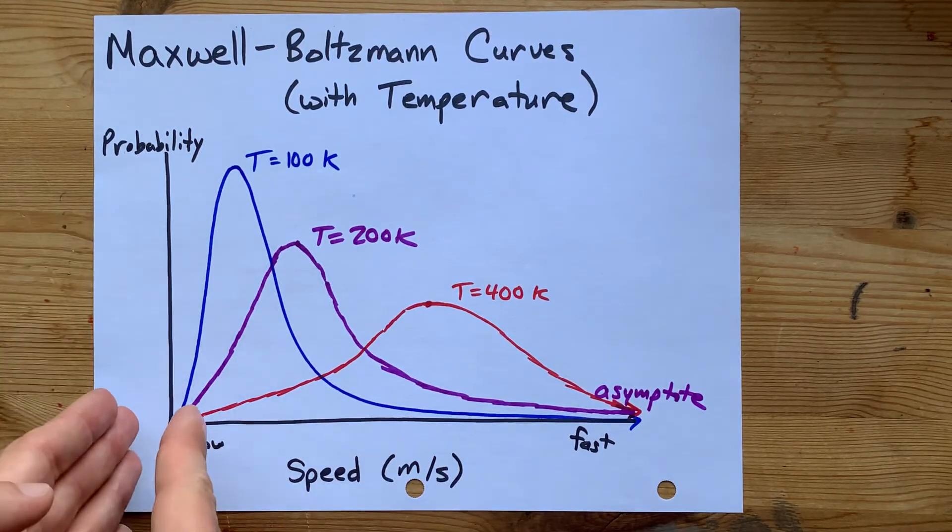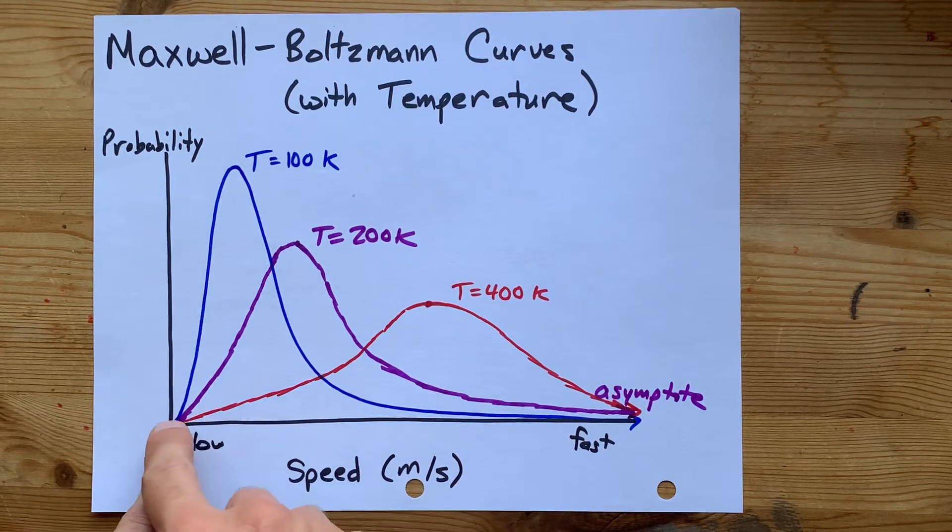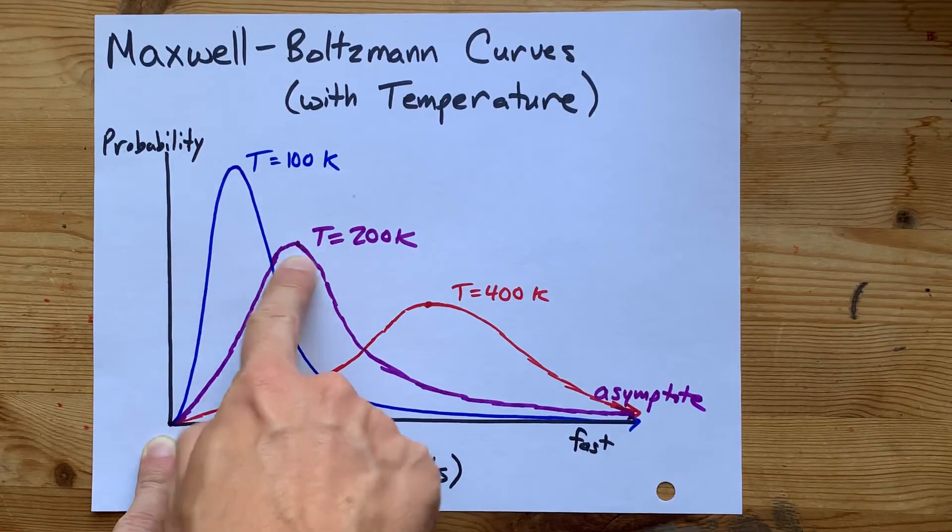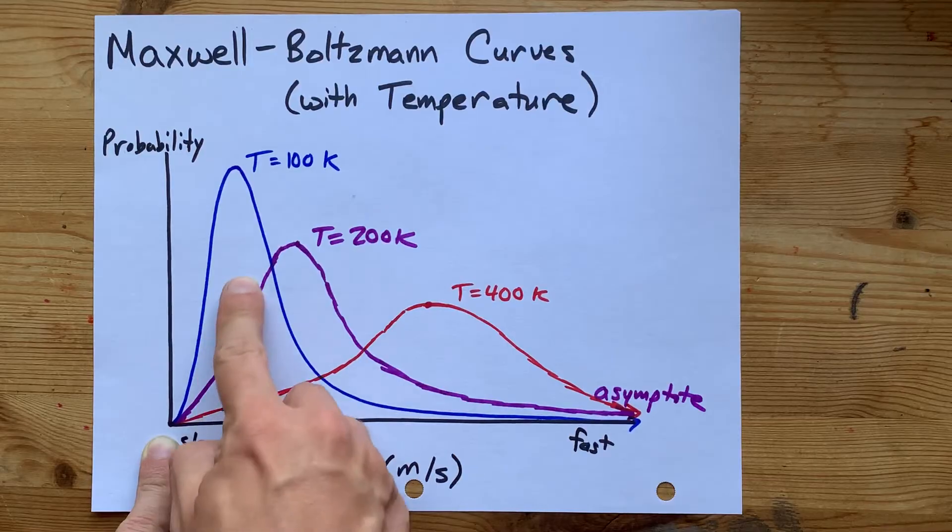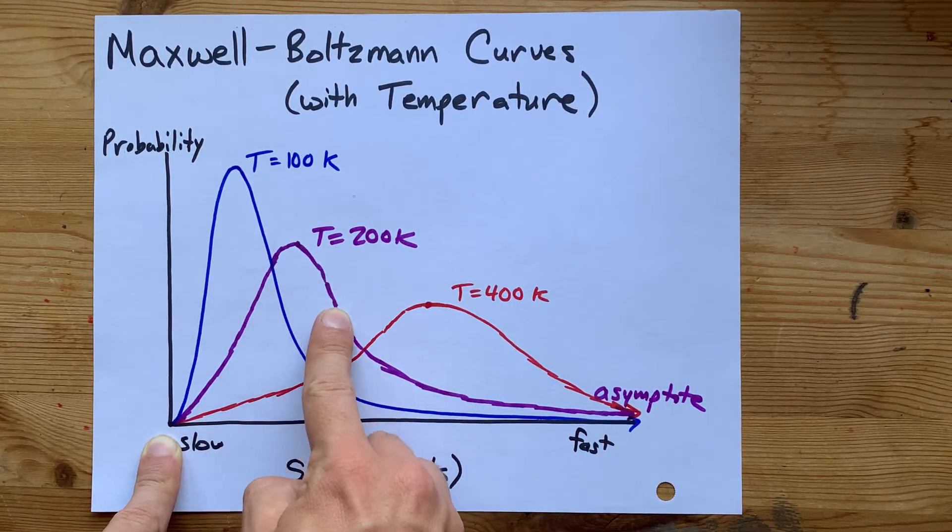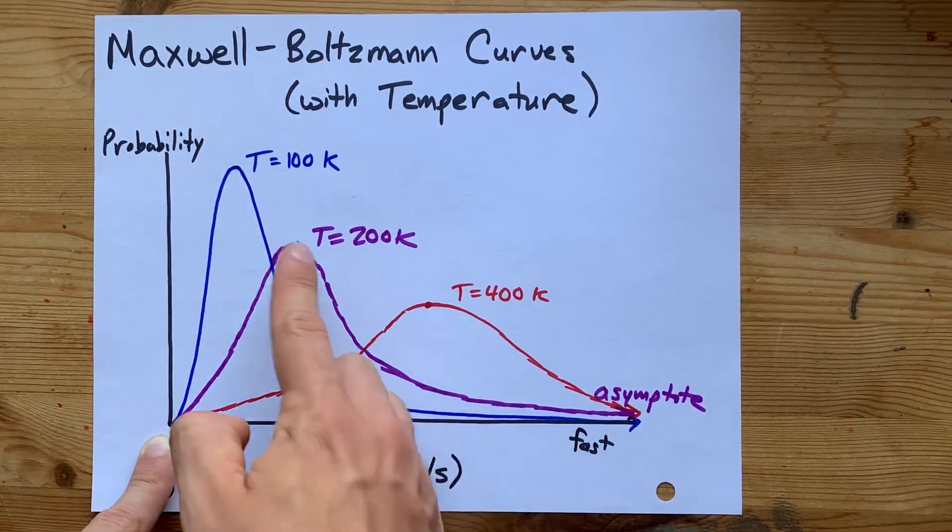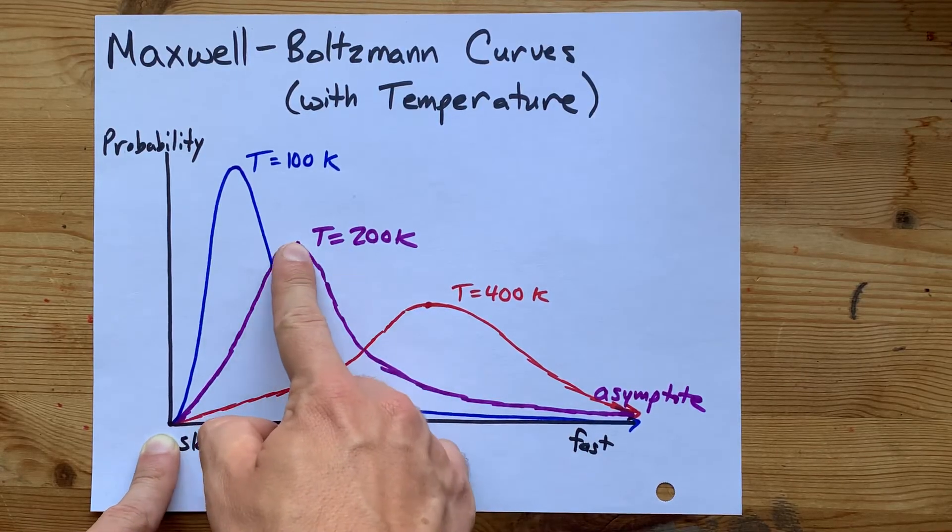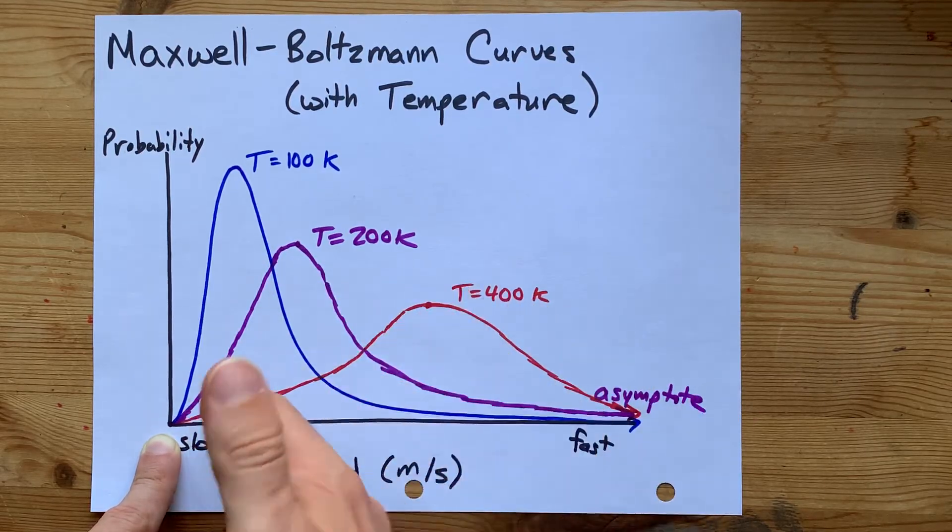And as you warm the sample up, more of the molecules will be traveling at higher speeds. So you're spreading your molecules out across a wider variety of speeds. That's why the peak goes down or the peak probability goes down here. But it does move to the right, which represents the higher probability that your molecules are traveling at a higher speed. The higher the temperature goes, the further this curve moves to the right and down.